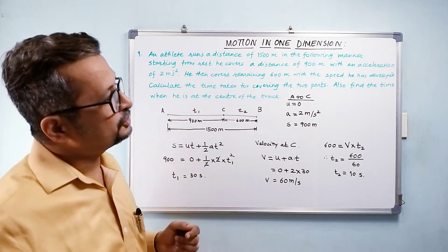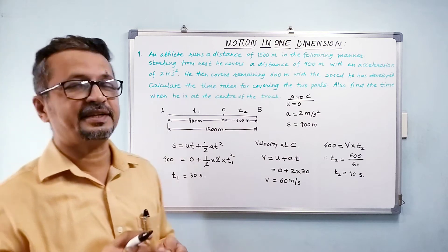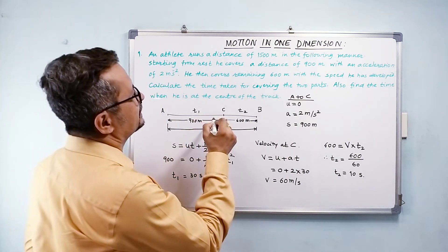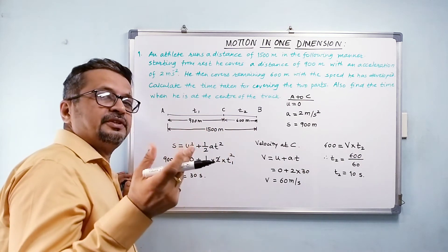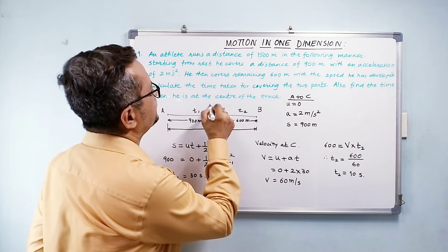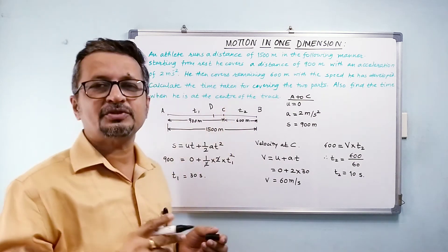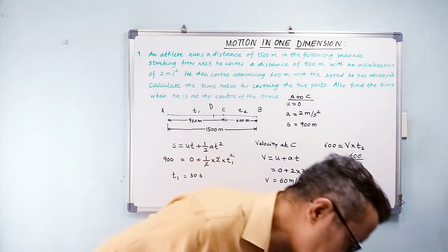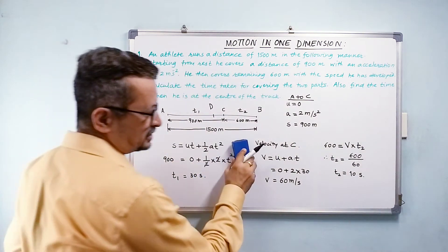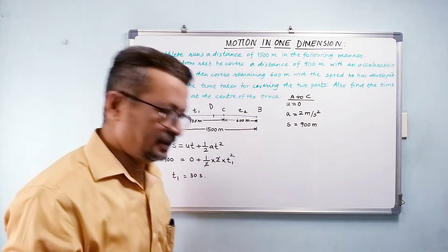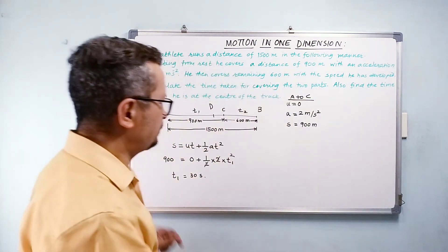They want you to find the time when he is at the center of the track. Time when he is at the center of the track. The track length is 1500 meters. So center of the track, let us say D, and that is going to be equal to 750 meters. Now for that, I am just clearing this. You can play the video again and look if you really want.